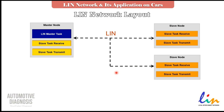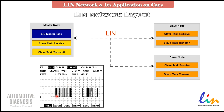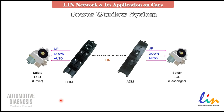A LIN network can share information up to 20 kilobits per second. On CAN bus, it's 125 kilobits per second for low-speed CAN and one megabit per second for high-speed CAN. So LIN is way slower than the other networks, but still much better than normal hard wire. The voltage in the LIN network is 12 volts.